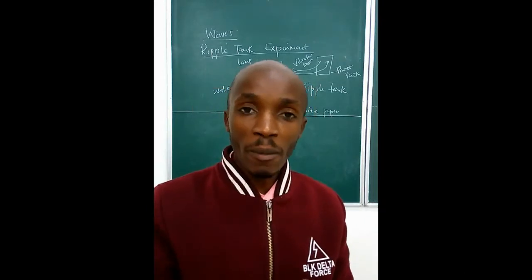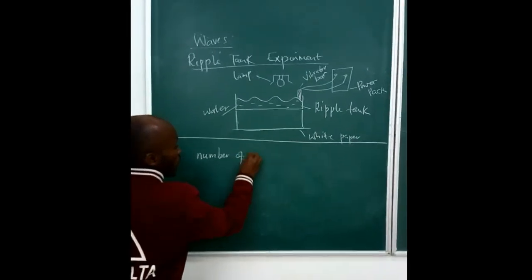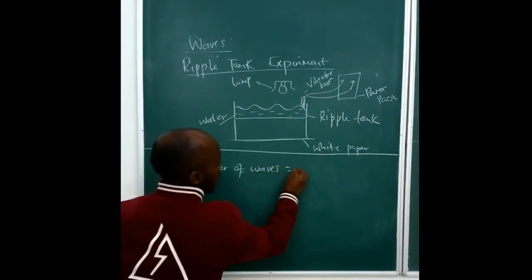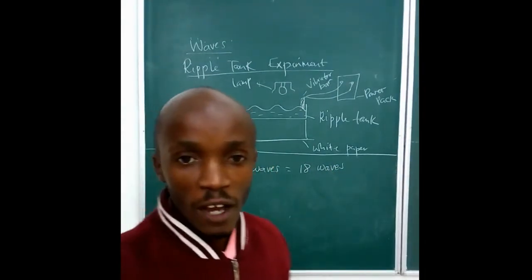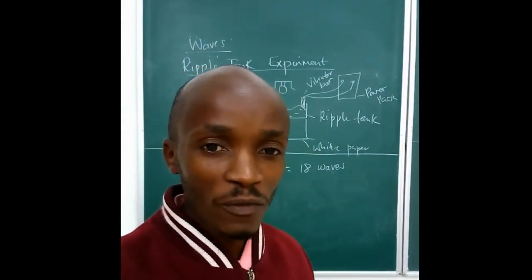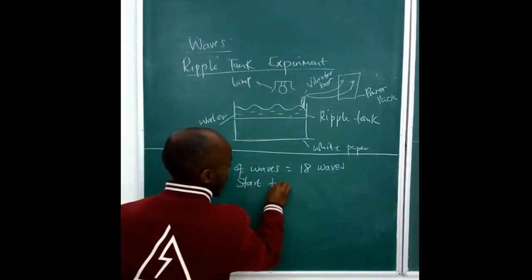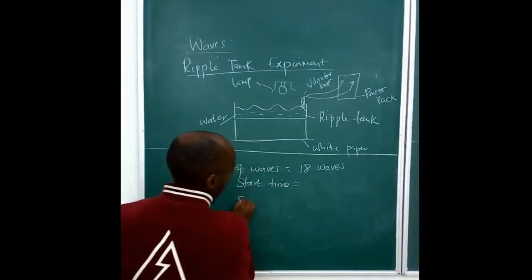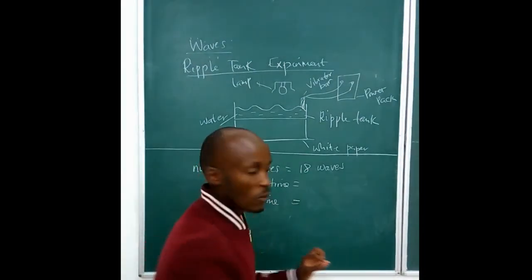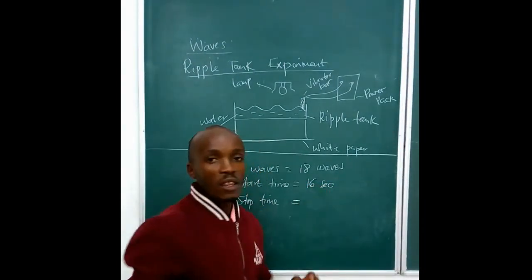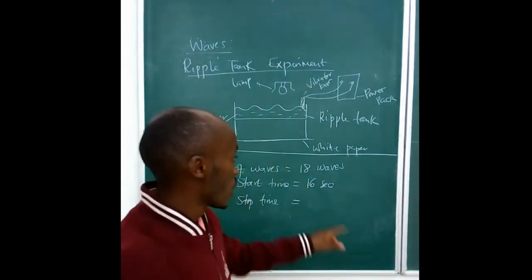And I think with those variables we are able to do some calculations. Let's see. We have the number of waves, and these waves have been made within what span of time. So we have the start time. The start time was at 16 seconds. That stopwatch in the background was showing that was 16 seconds.